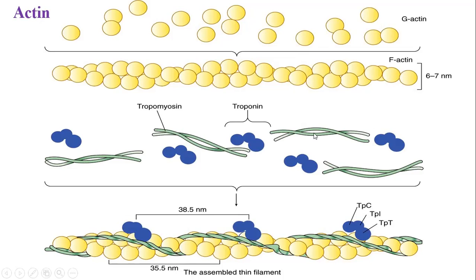F-actin along with tropomyosin and troponin combinedly forms the thin filament. Tropomyosin is a two-stranded alpha-helical rod-like structure located in the groove between the two helical strands of actin.